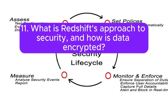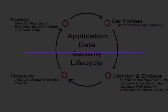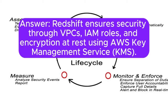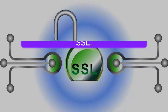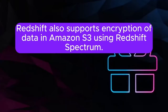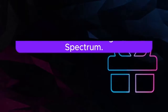Question 11: What is Redshift's approach to security, and how is data encrypted? Answer: Redshift ensures security through VPCs, IAM roles, and encryption at rest using AWS Key Management Service (KMS). Data in transit is encrypted using SSL. Redshift also supports encryption of data in Amazon S3 using Redshift Spectrum.